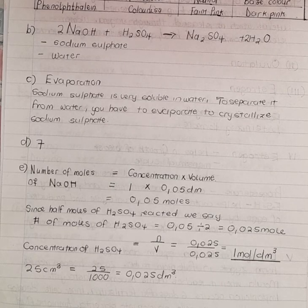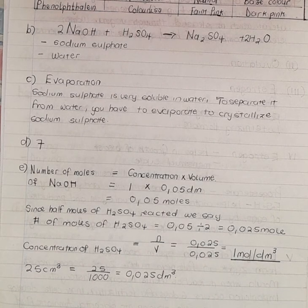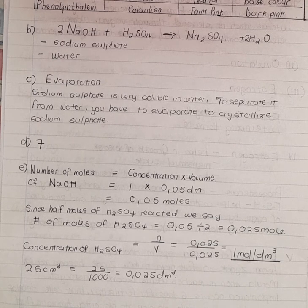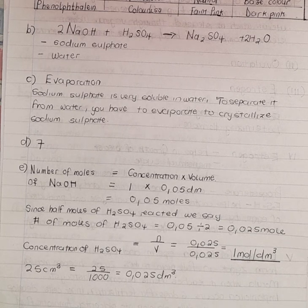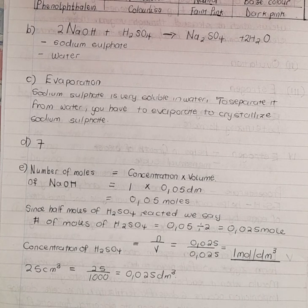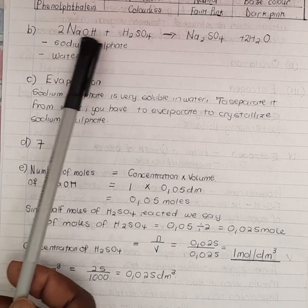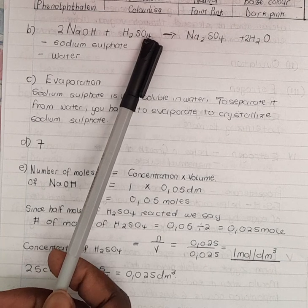That was the complete solution for number 10. In summary: the reagent used in the titration of sodium hydroxide and sulfuric acid is phenolphthalein indicator. The products formed are sodium sulfate and water. The method of separating them is evaporation. The pH of one of the products is 7. To calculate the concentration of H₂SO₄, we first find the moles of NaOH — 0.05 mol — then use the balanced equation: two moles NaOH reacts with one mole H₂SO₄.